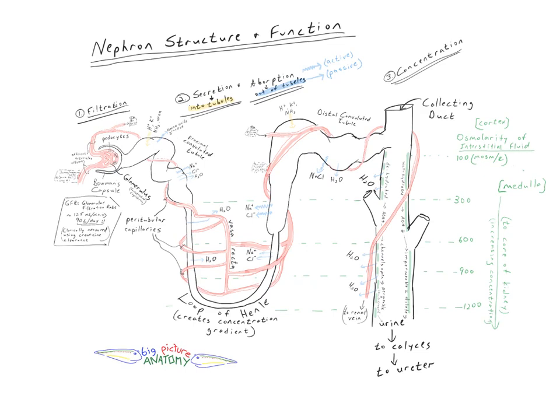This is Big Picture Anatomy with a look at how the nephron, the microscopic tubular structure inside the kidney, functions in regulating the salt content, water volume, and eventual concentration of the urine that the body produces.